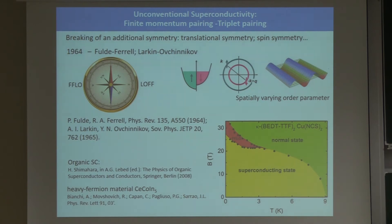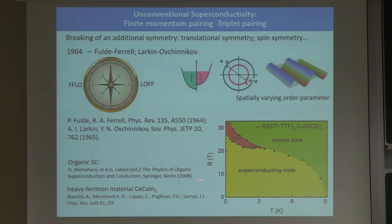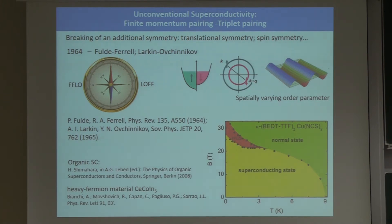The system doesn't really want to form this state very much. The only examples I could dig out in bulk materials for this FFLO phase are in some very special types of superconductors, in particular very close to where superconductivity is just about to disappear. These are results from an organic superconductor where at very high magnetic fields, they believe that this FFLO state — some kind of spontaneous breaking of translational symmetry for the order parameter — is forming, and then superconductivity disappears.